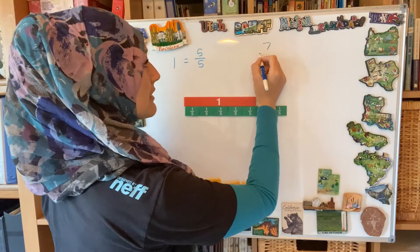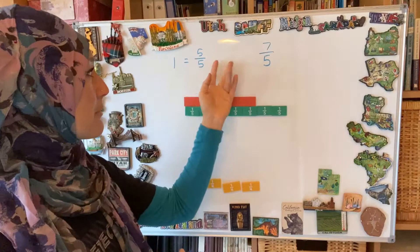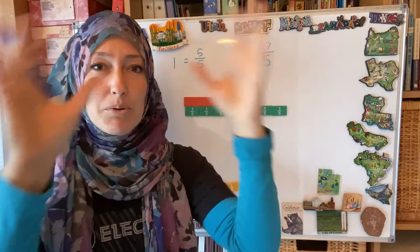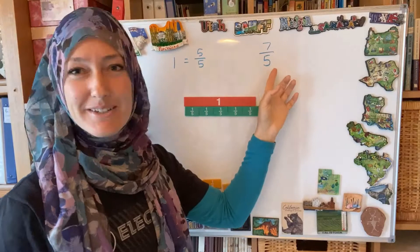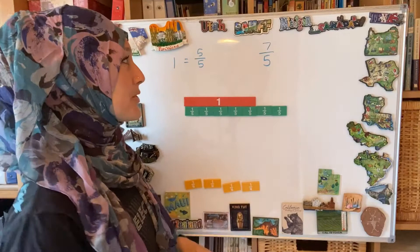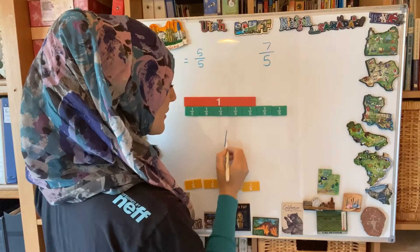I'm going to write the number of parts as seven, and the size of the part is one-fifth, so my denominator is still five. When the numerator is more than the denominator, you're overflowing — going more than the whole amount. This is called an improper fraction; it tells us we have more than a whole. Here we have one whole and then two extra pieces. You can think of this like a cup of chocolate milk: you can have it one-fourth full, half full, three-fourths full, and if you add more, it's going to overflow.